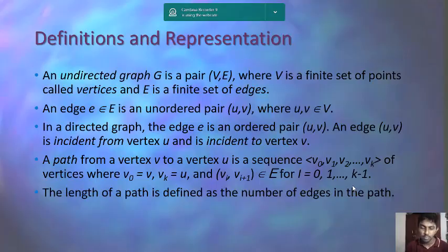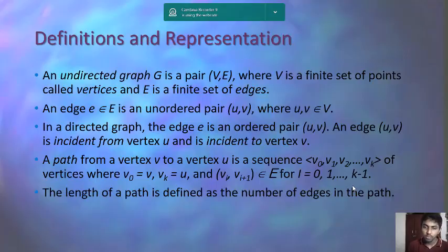A path is basically when we move from one vertex to another — a sequence of vertices where V0 equals V and Vk equals U. So V0 is the initial point and Vk is the final point, with edge (Vi, Vi+1) belonging to E for i equals 0 to k minus 1. The length of a path is defined as the number of edges in that path.